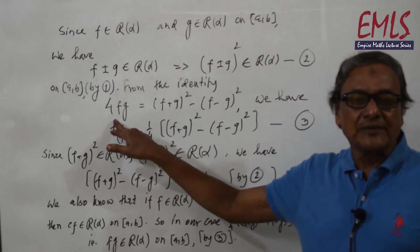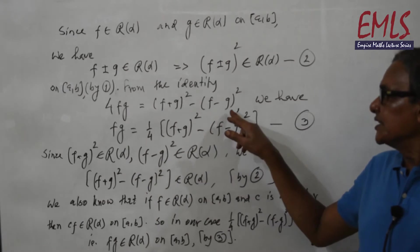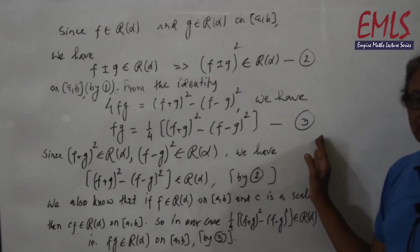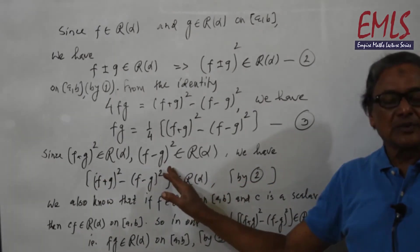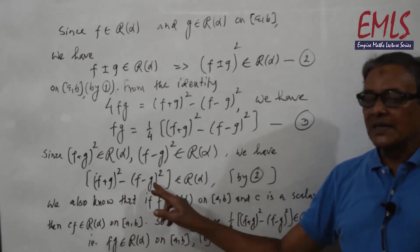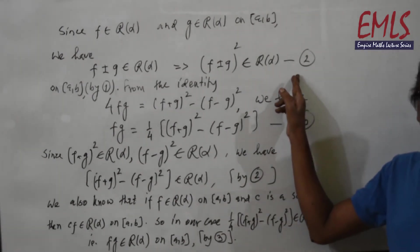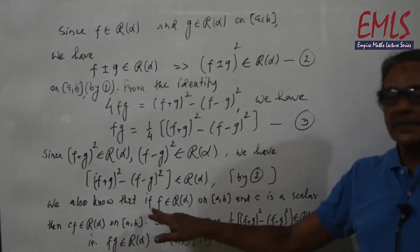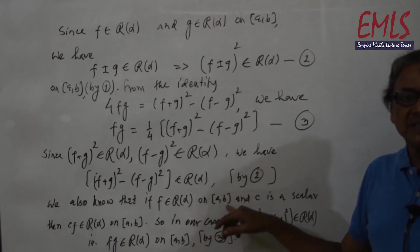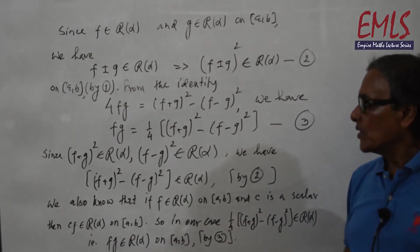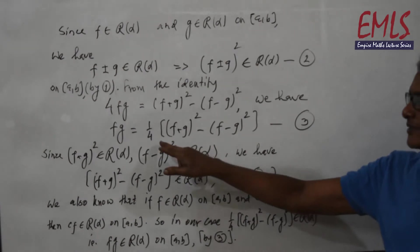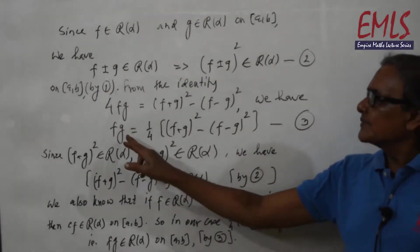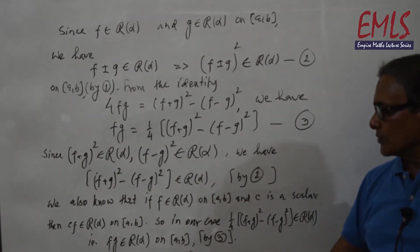From the identity 4fg = (f + g)² − (f − g)², we have f·g = (1/4)[(f + g)² − (f − g)²]. Since (f + g)² and (f − g)² both belong to Rα, their difference belongs to Rα. Also, since c·f belongs to Rα whenever f does and c is a scalar, (1/4)[(f + g)² − (f − g)²] belongs to Rα. Hence fg belongs to Rα on [a, b].